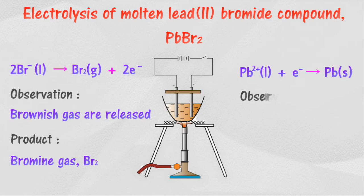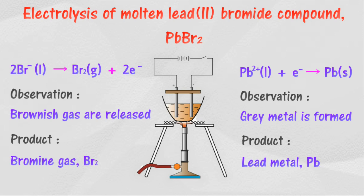Lead(II) ions are attracted to the cathode. Lead(II) ions move to the cathode and are discharged by receiving electrons from the cathode to produce gray lead metal.